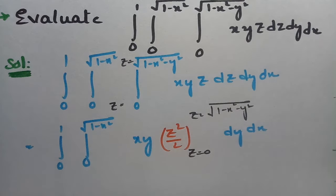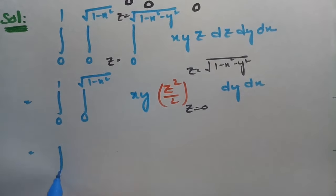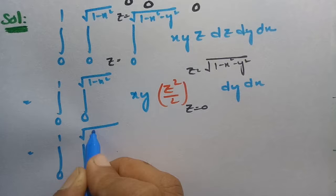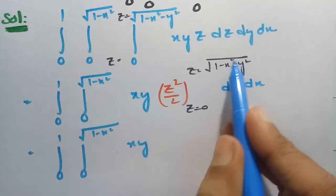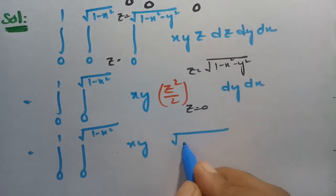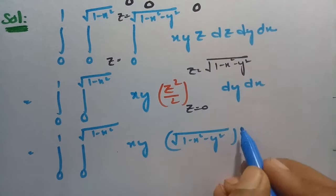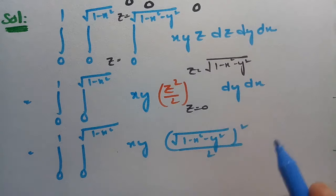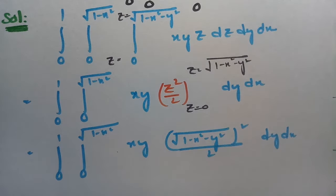After integrating with respect to z, we get: integral from 0 to 1, integral from 0 to √(1−x²) of xy times (1−x²−y²)²/2, dy dx — substituting the upper limit and noting the lower limit contributes 0.